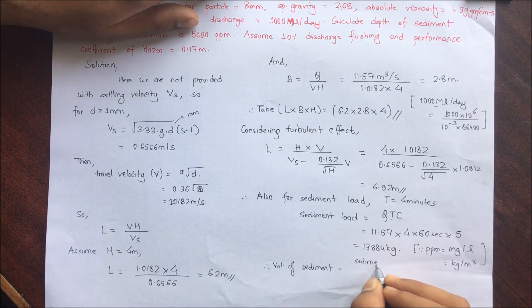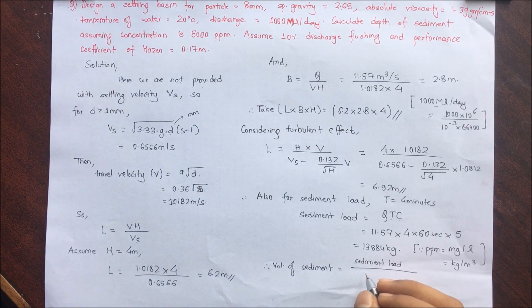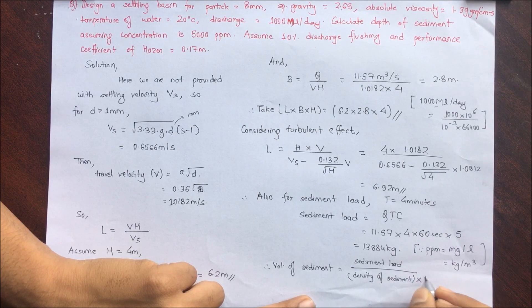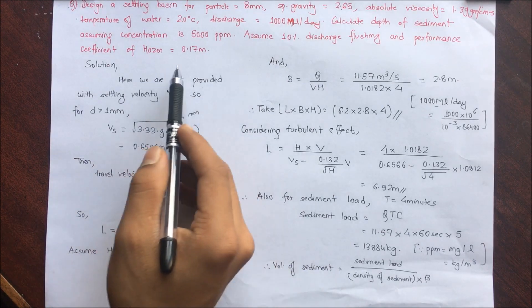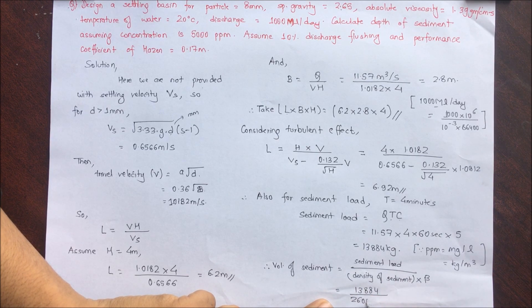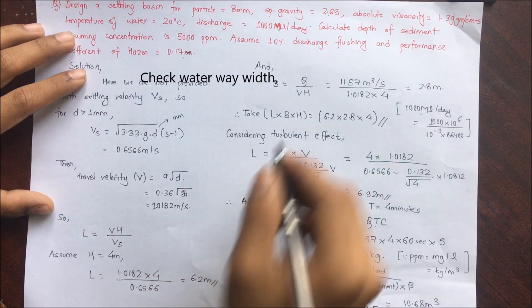Volume of sediment = sediment load / (density of sediment particles × packing factor β). Taking β = 0.5 and density = 2600 kg/m³: volume = 13,884 / (2600 × 0.5) = 10.68 m³.